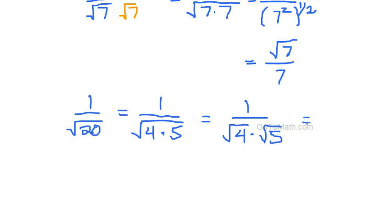But since 4 is a perfect square, the square root of a square is going to be 2, right? And so this just becomes 1 over 2 times the square root of 5.